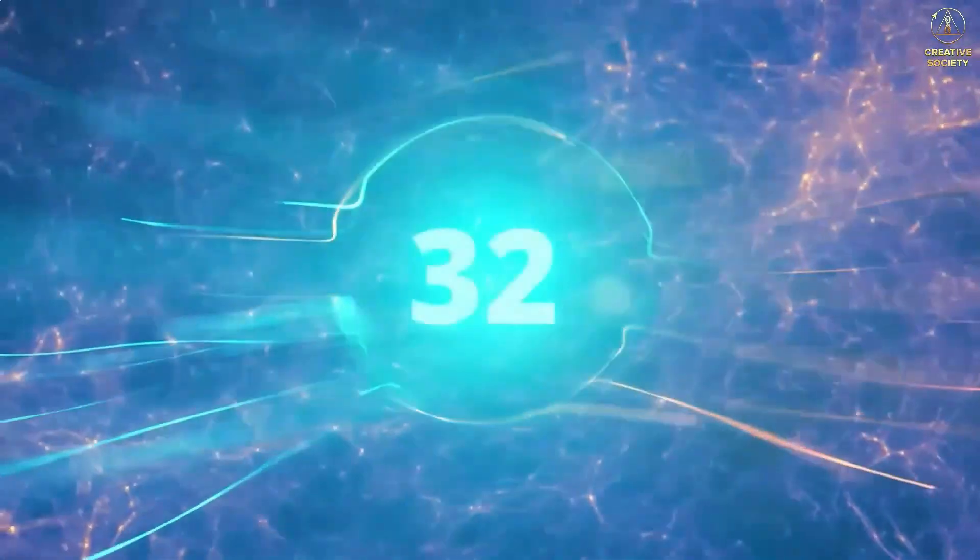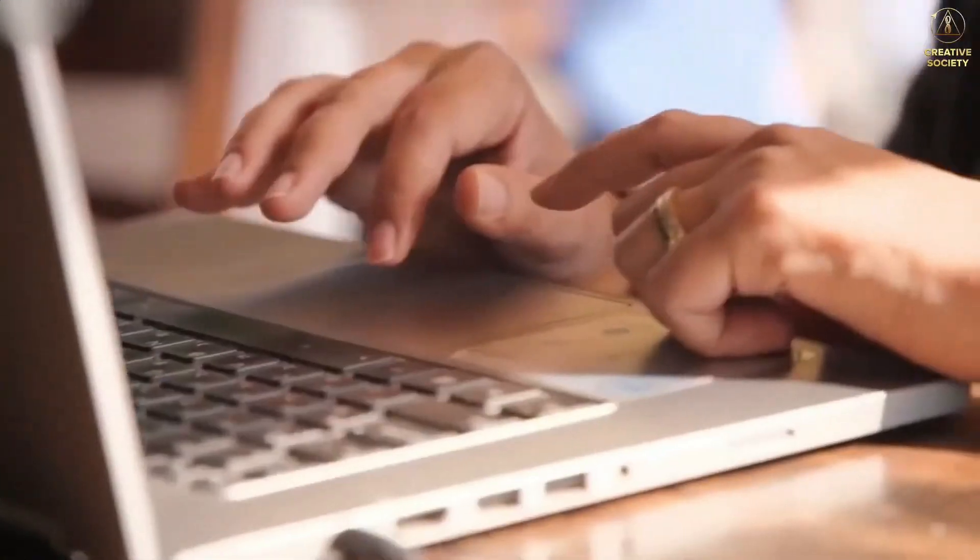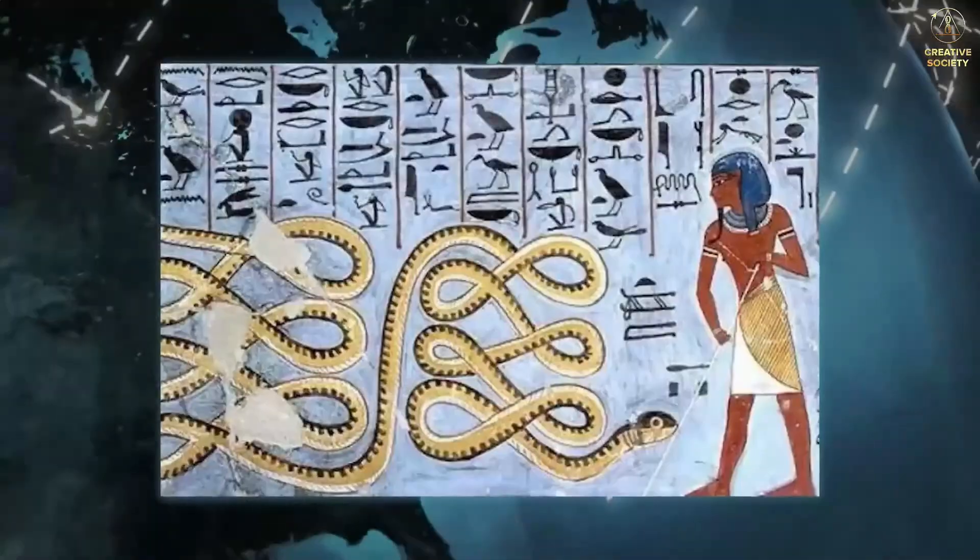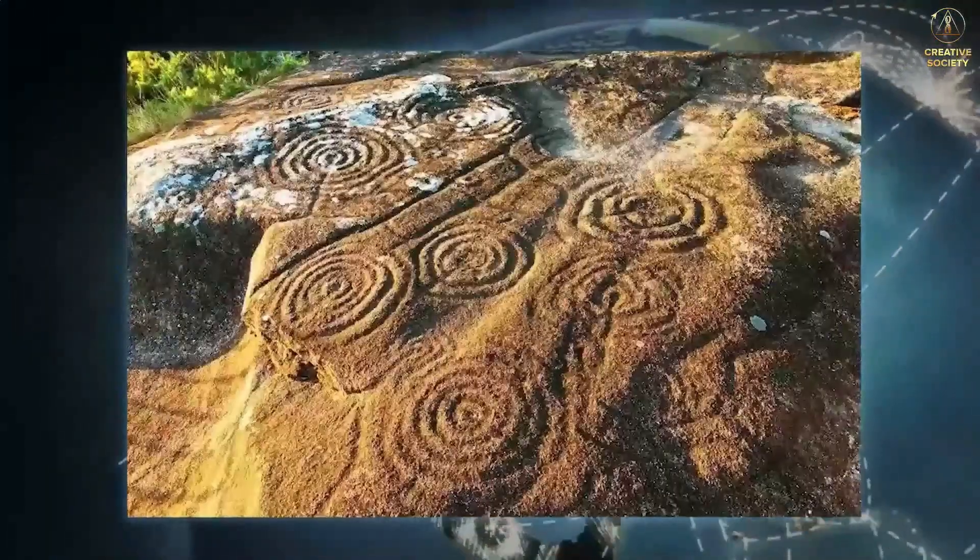Interestingly, this is also supported by historical facts. Our volunteers found references to the use of at least 32 types of energy in the ancient times. As paradoxical as it may sound, all this information which is new to us was known in ancient times and many artifacts from around the world prove this. Let's have a look at some of them.